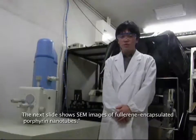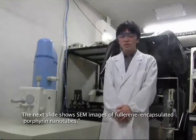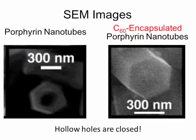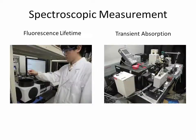The next slide shows the SEM images of fullerene-encapsulated porphyrin nanotubes. In the case of porphyrin nanotubes, you can see many hollow holes. However, the hollow holes are completely closed in the case of fullerene-encapsulated porphyrin nanotubes. Additionally, we measure fluorescence lifetime, transient absorption, and solar energy conversion properties.